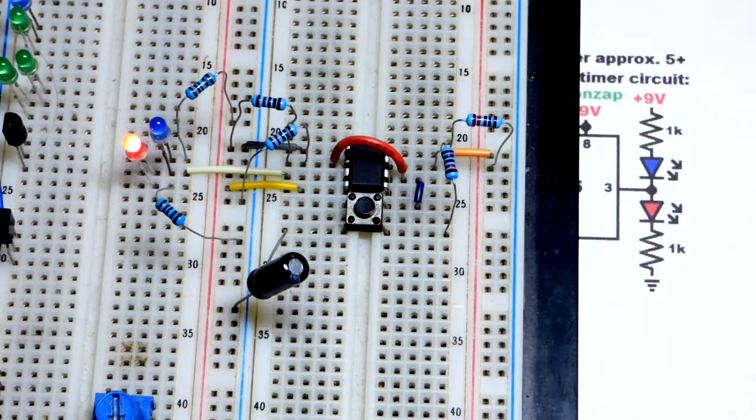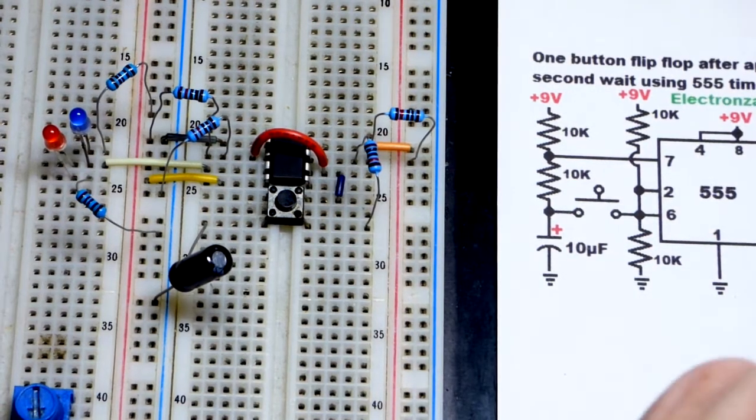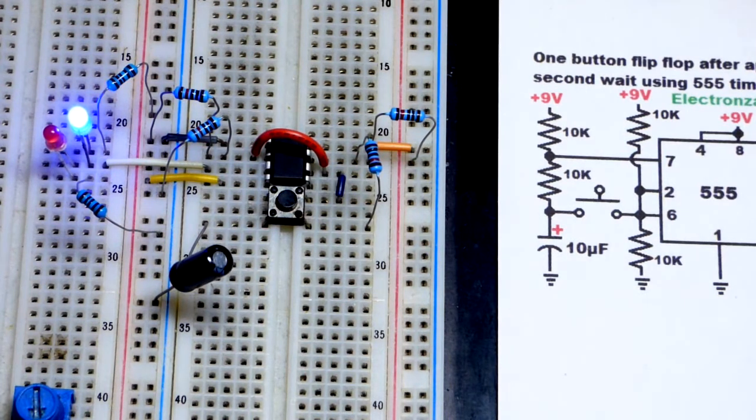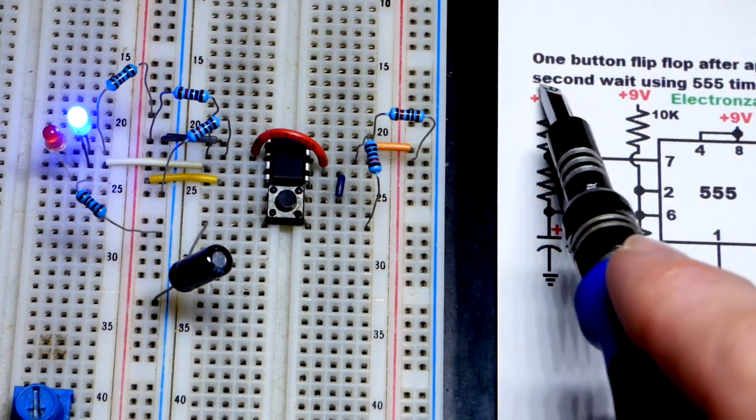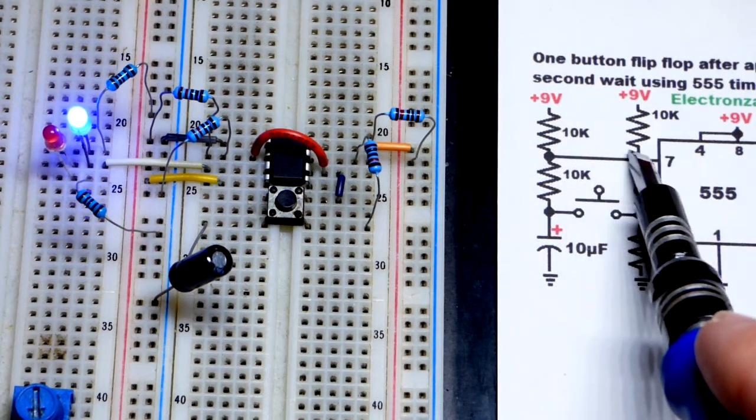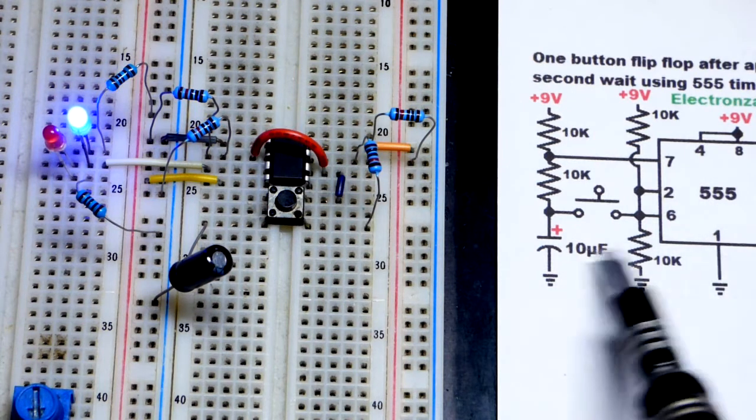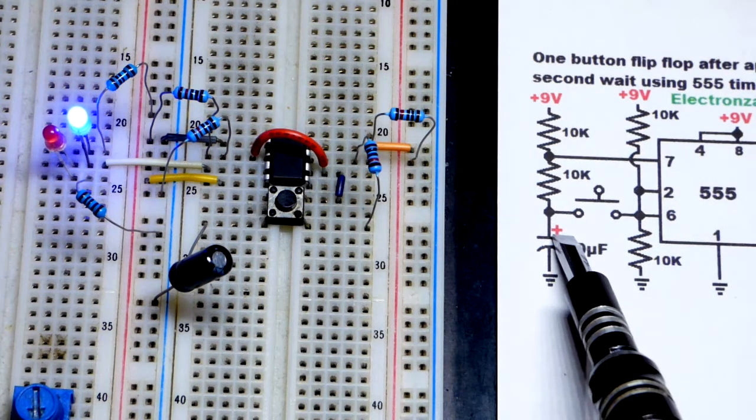So right now the power is off. I will turn it on and the blue LED is lit up. That tells me the output is low, which means pin 7 is also connected to ground. So whatever current goes through that 10 kilo ohm resistor is just going to ground. Whatever charge the capacitor may have discharges through there.